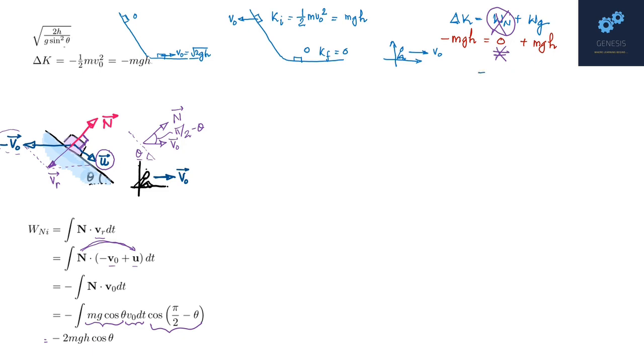Now if I substitute minus 2mgh cos θ here, I still don't get a balance on the LHS and RHS. There is still something we are missing. And herein comes the most beautiful part of the problem. What we are missing is the work that the normal does while the velocity vector changes its direction during that small connecting joint, that is, during this small connecting part.